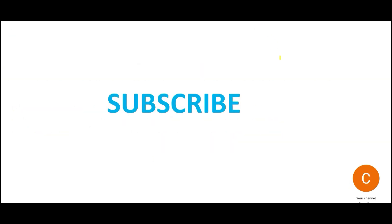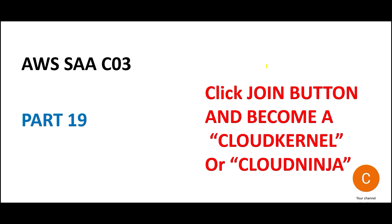Please hit the subscribe button. This channel is totally dedicated to help you clear AWS, Azure and GCP certifications. Some questions I am putting free of cost, but for some questions you will have to pay a small premium and become a member. Do not become a Cloud Soldier member — that is only for stickers and emojis. If you want questions, at least become Cloud Kernel or Cloud Ninja. Cloud Ninja is the expensive one and gives access to all advanced certification content. Cloud Kernel is the cheaper one, covering intermediate level certifications like this C03. I hope you like this part — see you in the next part, which is a paid part available only to Cloud Kernel or Cloud Ninja members. Please click the join button below this video.